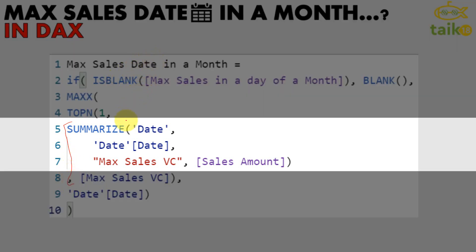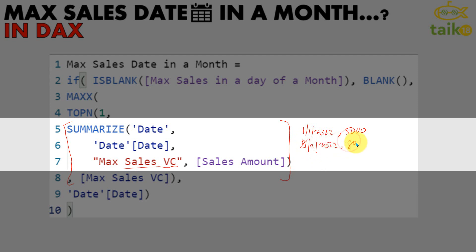Basically what I'm doing here is using SUMMARIZE with a table name and column name at the day level. After that, I'm giving it a name for a virtual column — 'VC' — which stands for virtual column, and summing the sales. What this does is create a virtual table with dates and their corresponding sales: for example, 1/1/2022 with sales of 5,000, 2/2/2022 with 800, and 1/3/2022 with 300.